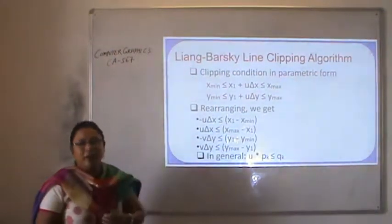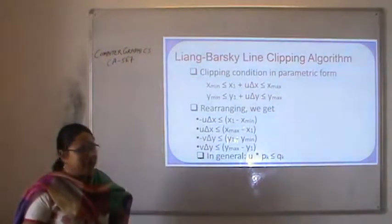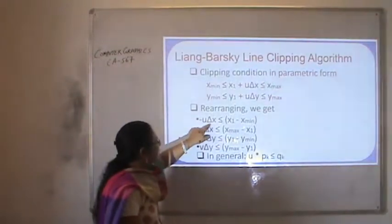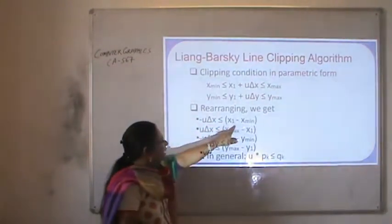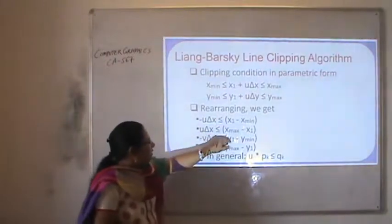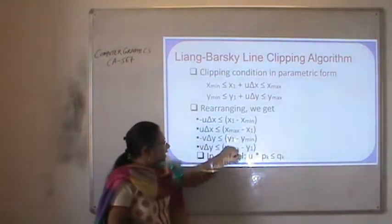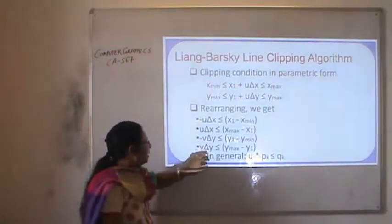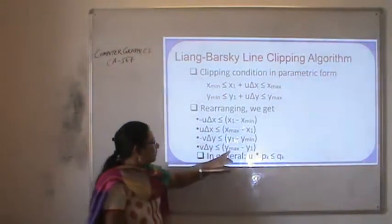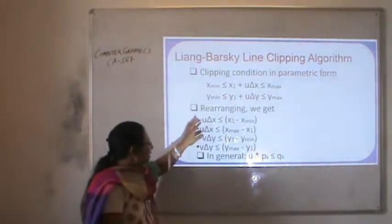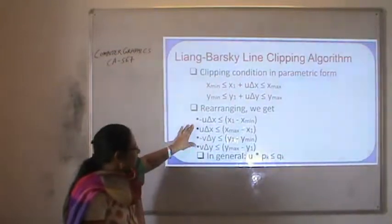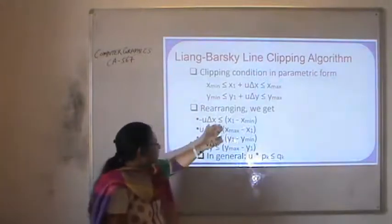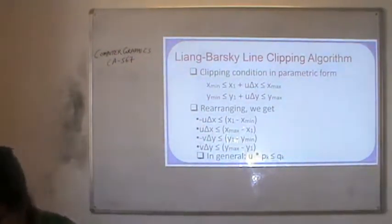Rearranging the clipping equations, we get: minus u·delta-x ≤ x1 minus x-min; u·delta-x ≤ x-max minus x1; minus u·delta-y ≤ y1 minus y-min; and u·delta-y ≤ y-max minus y1. In general form, these four parts can be written as u·p_k ≤ q_k. This is the generalized form used to solve the problem.